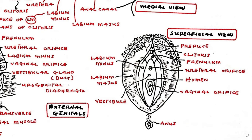The labia majora do not merge posteriorly and therefore become part of the skin over the perineal body. Medial to the labia majora, on either side of the vagina and urethra, are two thin non-fatty folds of skin known as the labia minora. The space or cavity between the labia minora is the vestibule, into which the vagina and the urethra open.